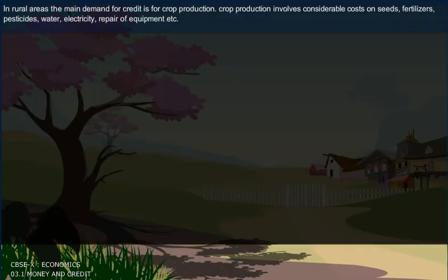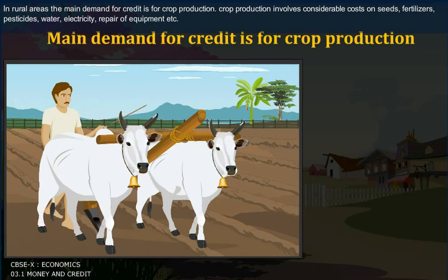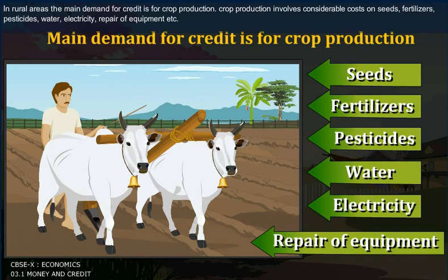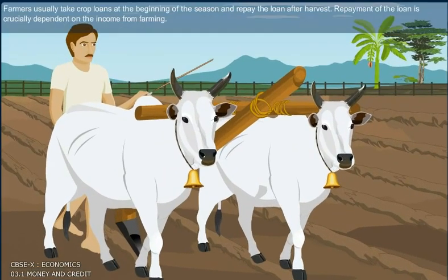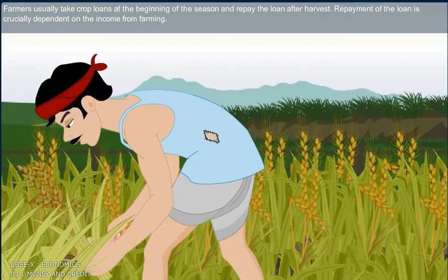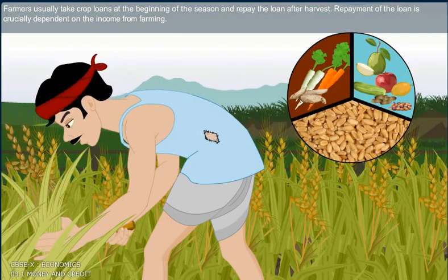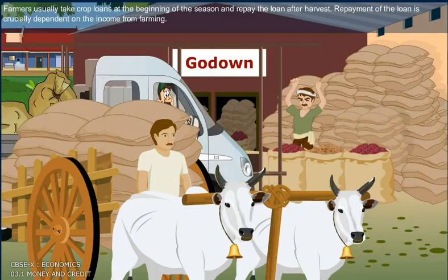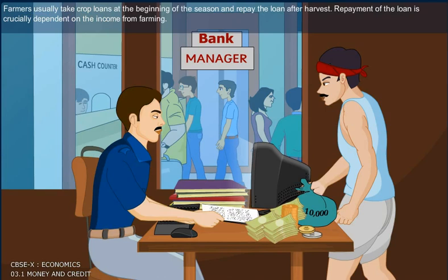In rural areas, the main demand for credit is for crop production. Crop production involves considerable costs on seeds, fertilizers, pesticides, water, electricity, and repair of equipment. Farmers usually take crop loans at the beginning of the season and repay the loan after harvest. Repayment of the loan is crucially dependent on the income from farming.